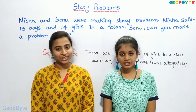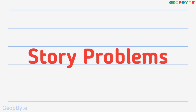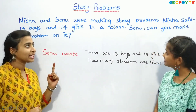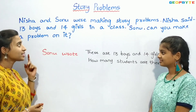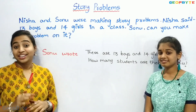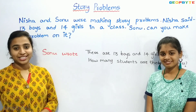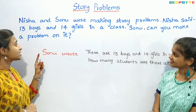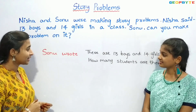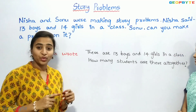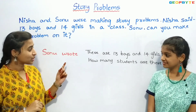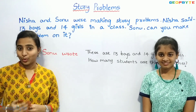Now, let us get into the topic: Story problems. Hey kids, see here. Nisha and Sonu were making story problems. Nisha said: 13 boys and 14 girls are in a class. Sonu, can you make a problem on it? So Sonu wrote: There are 13 boys and 14 girls in a class. How many students are there altogether? From that story, Sonu made this question. Similarly, we will also make some questions on some stories.